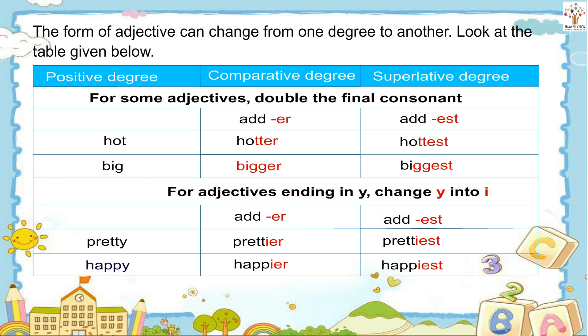For some adjectives, double the final consonant, then add ER or EST. Examples: hot, hotter, hottest; big, bigger, biggest.